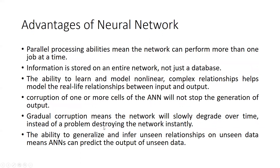The advantages of neural networks include: parallel processing ability, meaning the network can perform more than one job at a time. Information is stored on the entire network, not just a database. The ability to learn and model nonlinear complex relationships helps model real-life relationships between input and output, as seen in stock market prediction. Corruption of one or more cells of the ANN will not stop output generation — the network degrades gradually rather than failing instantly. Additionally, ANN can generalize and predict output for unseen data.